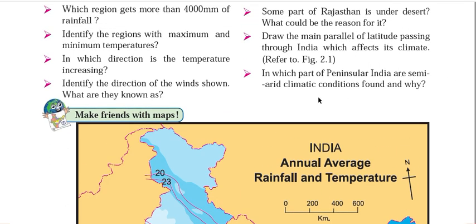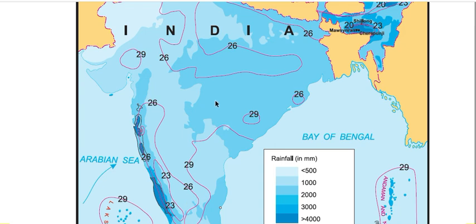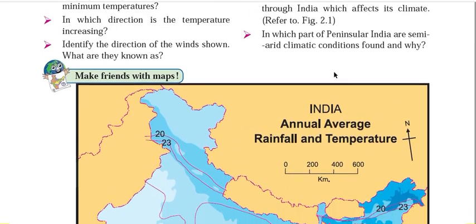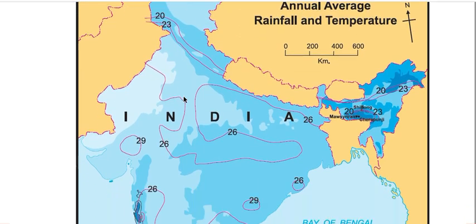In which part of Peninsular India are semi-arid climatic conditions found and why? In the central part of Peninsular India — Marathwada, Vidarbha region, Karnataka plateau, Rayalaseema plateau, and Telangana plateau — semi-arid climatic conditions are found. This is because rain shadow region formation takes place here. As south-western winds come from the west, the Western Ghats create an obstruction, and orographic rainfall occurs on the coastal region. As these winds move ahead they lose maximum humidity, so when they reach this area they don't have much precipitation potential, causing drought-like conditions and semi-arid climate.